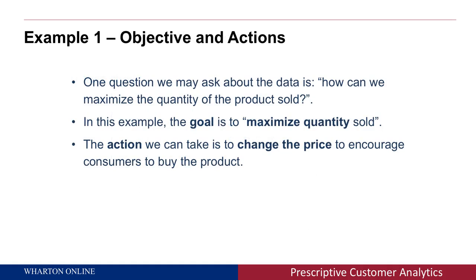Now let's try to define an objective or a goal. We would like to ask: how can we sell the most quantity of the product? How can we maximize the quantity being sold? In this case, the goal or the objective is simply to maximize quantity — we want to make it as large as possible. The action we can take is straightforward: we can change the price of the product, increase it or decrease it. By changing the price, we either encourage or discourage consumers whether to buy or not buy the product.